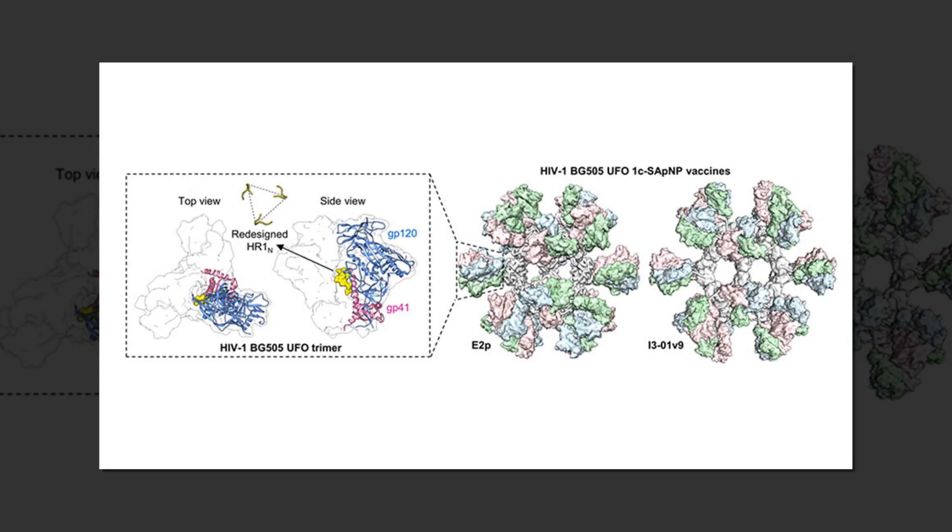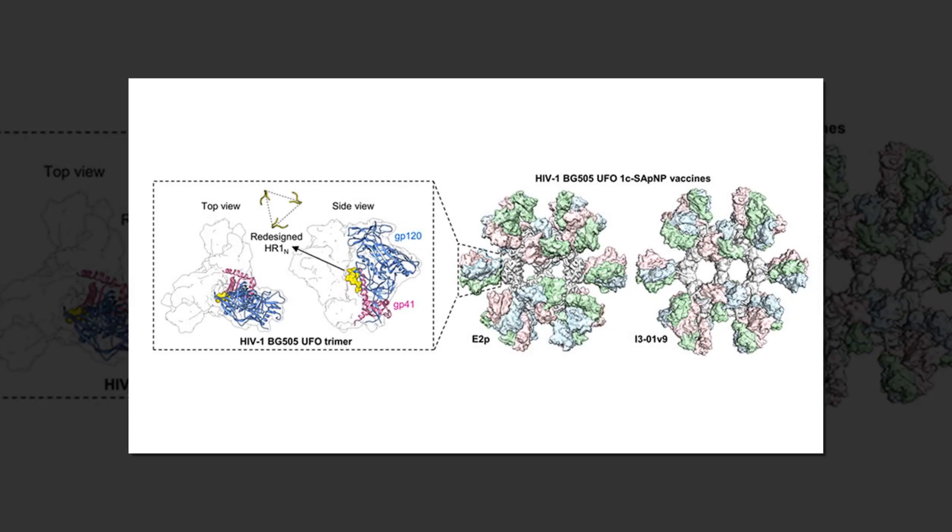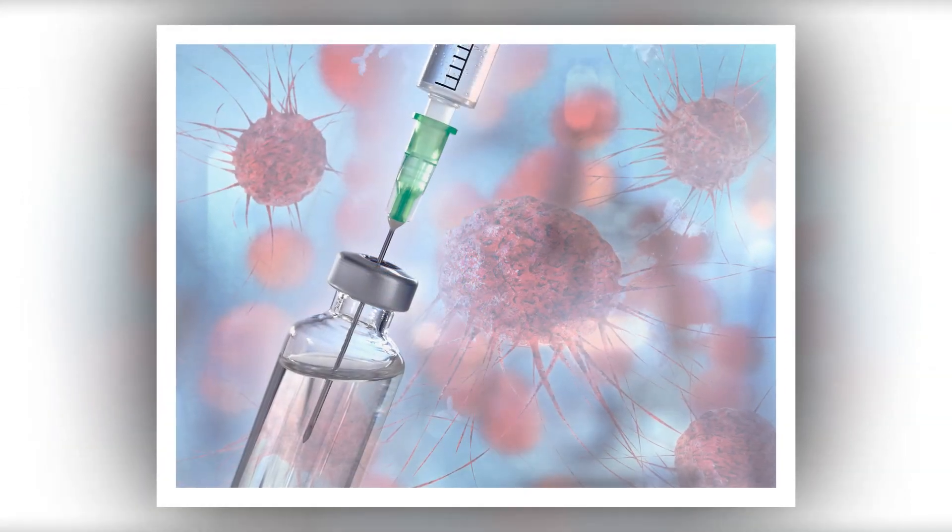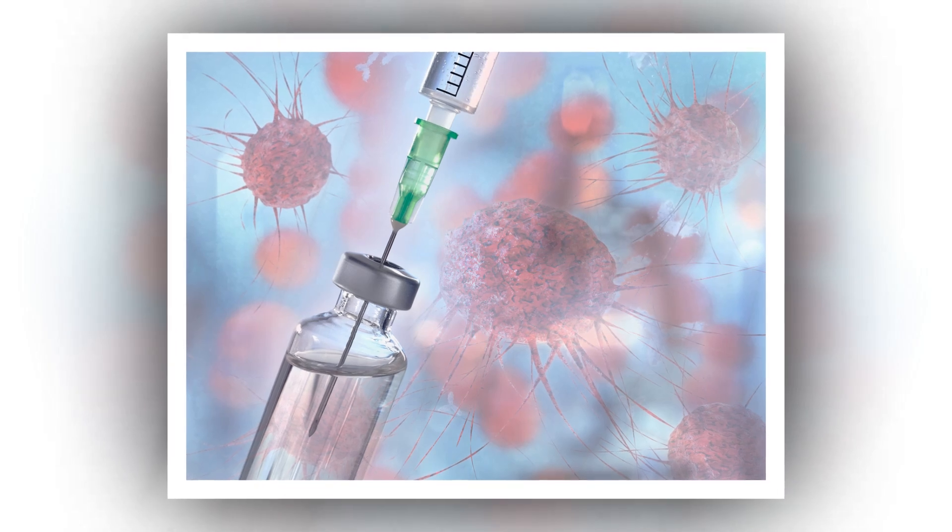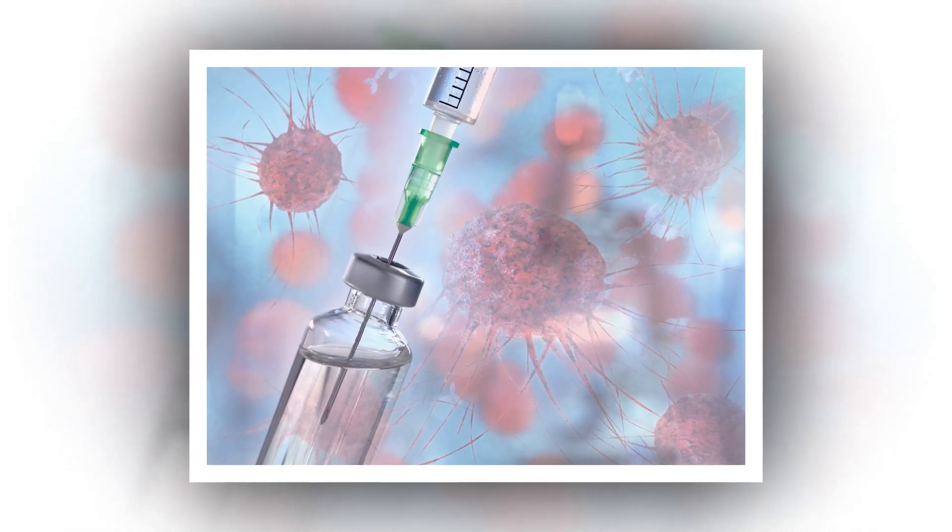One novel strategy known as germline targeting uses a series of primer and booster vaccines to train B cells—the immune system's antibody factories—to recognize HIV and produce broadly neutralizing antibodies (bnAbs) that can deactivate the virus.